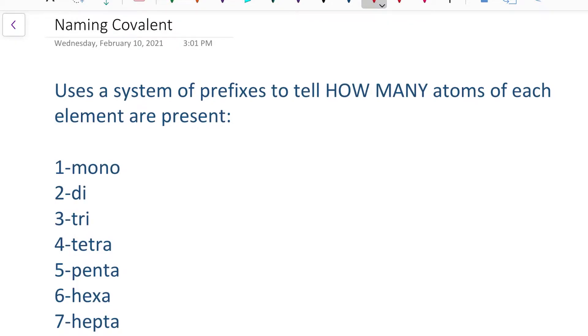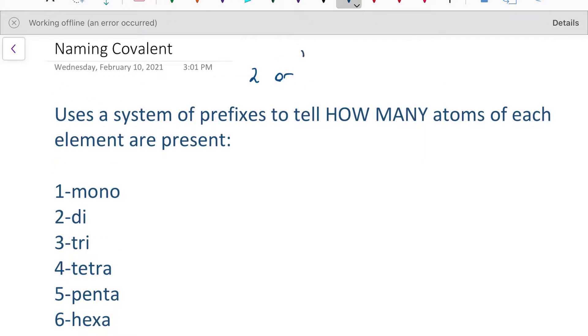In our last section of naming, we are going to learn how to name covalent compounds. If you remember from your study of covalent compounds, covalent compounds are made up of two or more nonmetals. Covalent compounds involve the sharing of electrons, and in covalent compounds we do not reduce to the lowest whole number ratio.